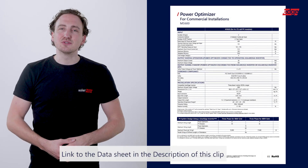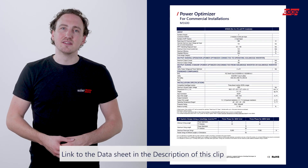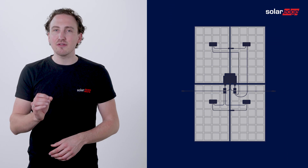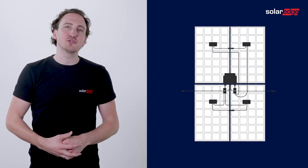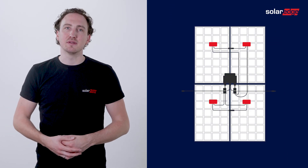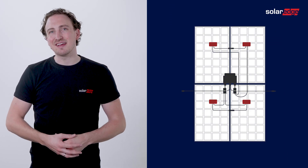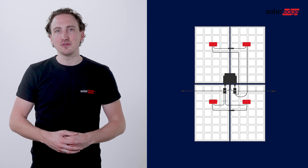When connecting modules to the M1600, follow these guidelines and look carefully at the PV module junction box placement to optimize installation time and DC cable usage. Here are a few more important things to remember when installing the M1600 power optimizer.